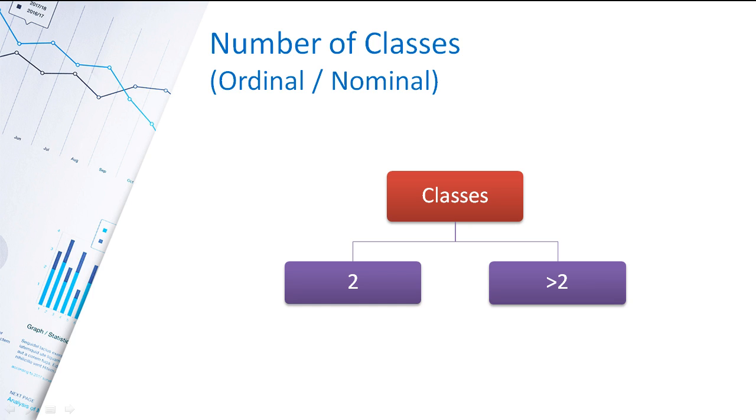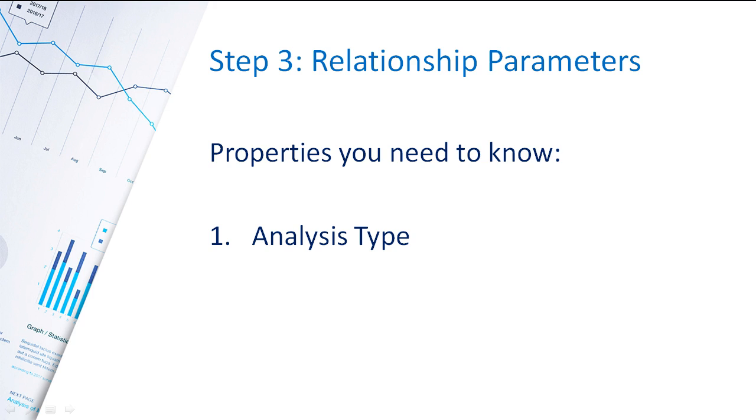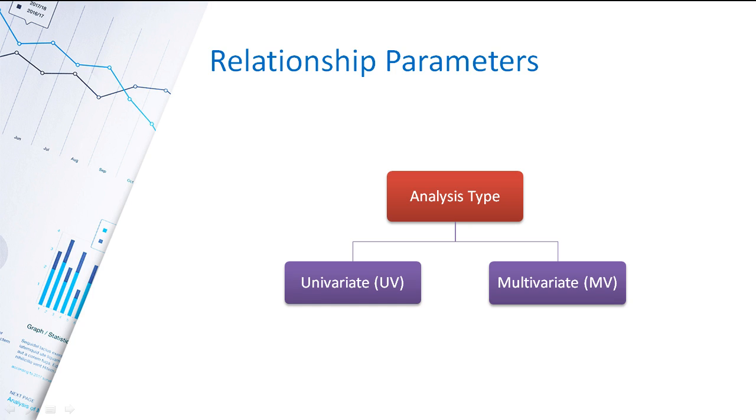Once you've got that information, write it down, put it to one side. Then you want to know about the relationship parameters. You need to know the analysis type of the analysis that you're going to do. Basically, for this, you need to know whether you're going to do a univariate test or a multivariate test. And that will tell you which of your two hypothesis wheels to look on.